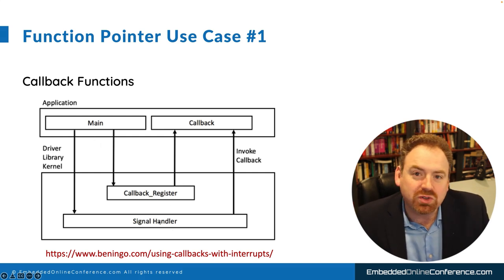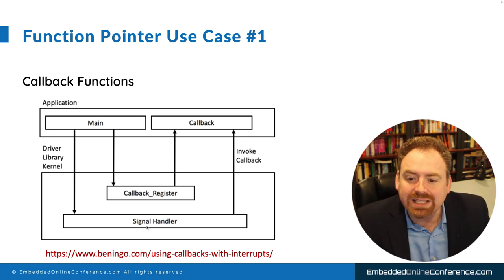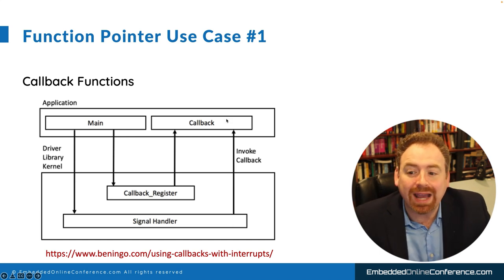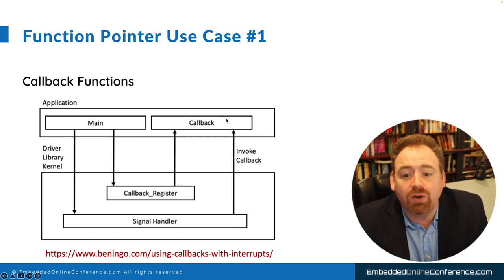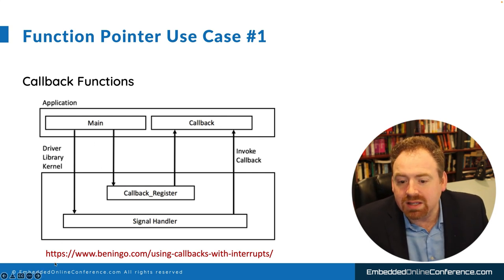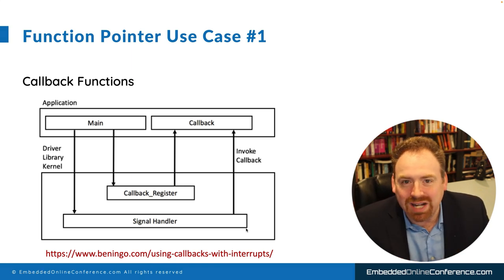We probably want our interrupt service routines or signal handlers to change behaviors from one application to the next — especially if we're reusing code across multiple product lines that might have different types of functions or filters. In a dynamic version, you might have the main function actually register a function pointer with the lower-level kernel, which then knows that when the interrupt service routine runs, it has the pointer back to the application code and can run application code from the lower-level code without making a whole bunch of changes. The recommendation to do it safely is to statically allocate this — you can visit my blog for more details.